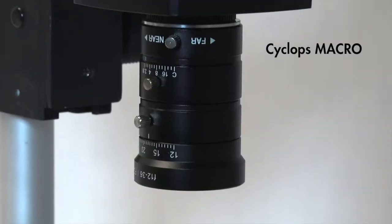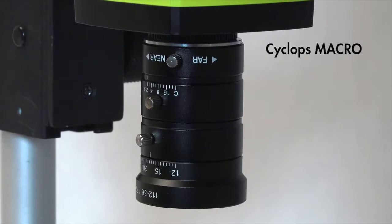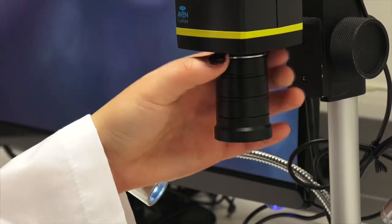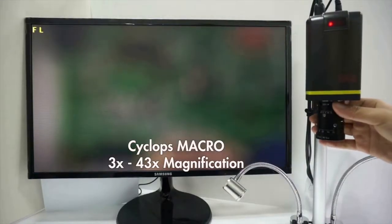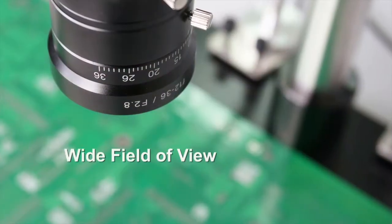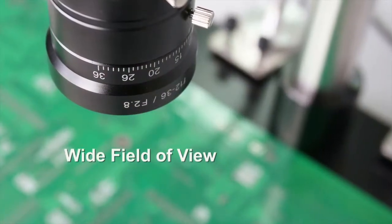The Cyclops Macro system features an optical macro zoom lens for crystal clear imaging, featuring dials for zoom, focus and aperture adjustment. With a magnification range of 3x to 43x, the Cyclops Macro is ideal for applications that require a wide field of view.